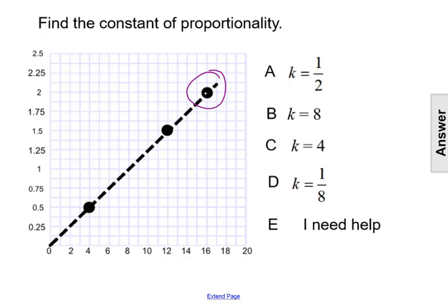So this is the point 16, 2. So that's the ordered pair (16, 2), making the x value 16 and the y value 2.